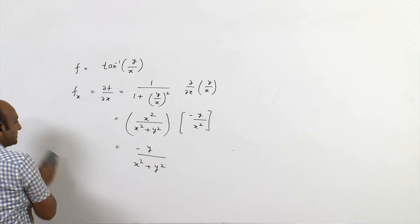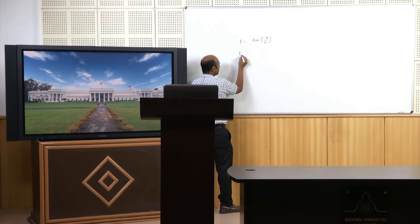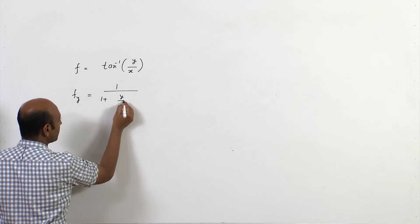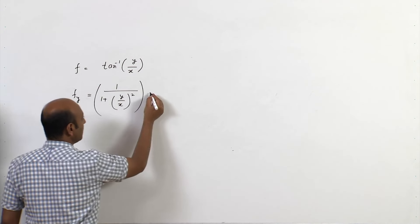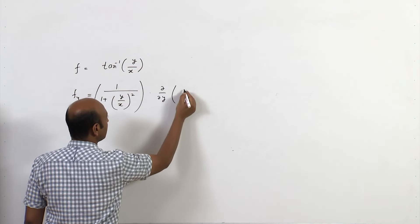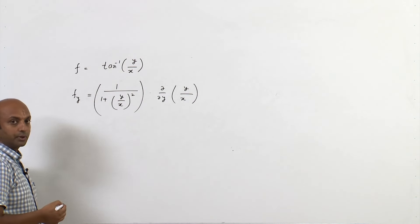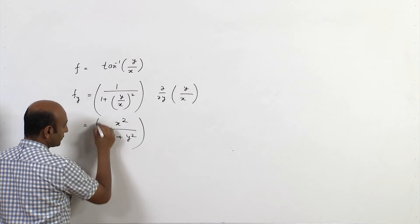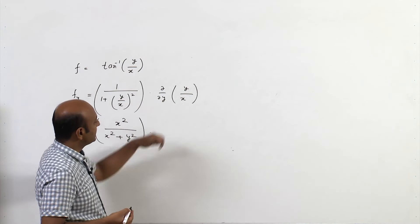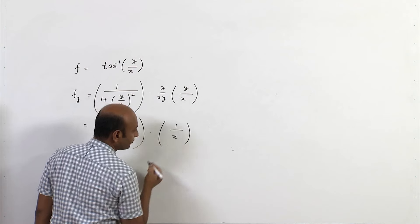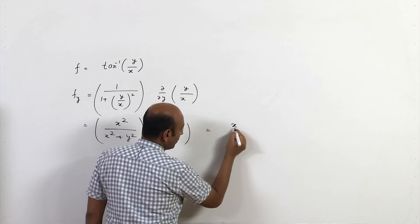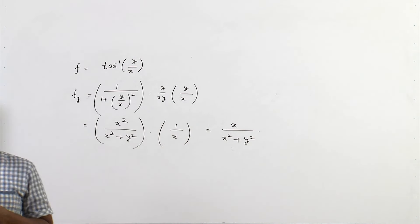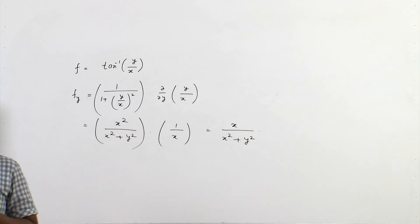For f_y = ∂f/∂y, again using the chain rule: 1/(1 + t²) multiplied by ∂/∂y of (y/x). Since x is constant, ∂/∂y of (y/x) = 1/x. So f_y = [x²/(x²+y²)] · (1/x) = x/(x²+y²).